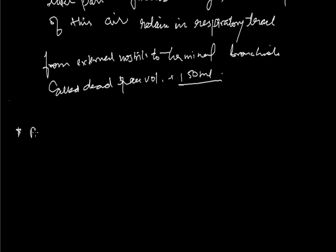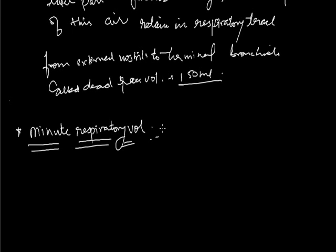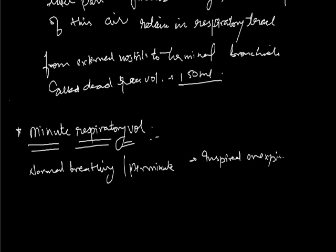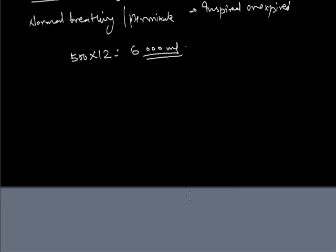Next is Minute Respiratory Volume — the volume of air inspired or expired per minute during normal breathing. Since a person breathes 12 to 15 times per minute and each breath is 500 ml, multiplying 500 ml by 12 gives approximately 6000 ml as the minute respiratory volume.